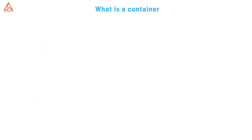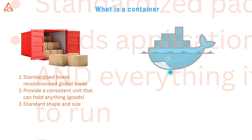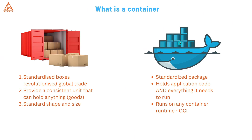So if VMs have these limitations, what's the alternative for many modern applications? Containerization. A software container is like a standardized shipping container — before those metal boxes, shipping goods was chaotic, but standardized containers revolutionized global trade by providing a consistent unit that can hold anything and be moved by any compatible transport: ships, trains, trucks. Similarly, a software container is a standardized package that holds your application code and everything it needs to run — libraries, dependencies, configuration files, everything.